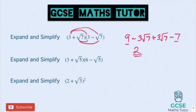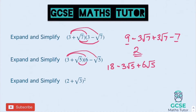On to the second one. 3 times 6 is 18. 3 times negative root 5 is negative 3 root 5. Root 5 times 6 is positive 6 root 5. And root 5 times negative root 5 is negative 5. Tidying up: 18 take 5 is 13. And negative 3 lots of root 5 add 6 lots of root 5 gives us positive 3 lots of root 5. Final answer: 13 plus 3 root 5.